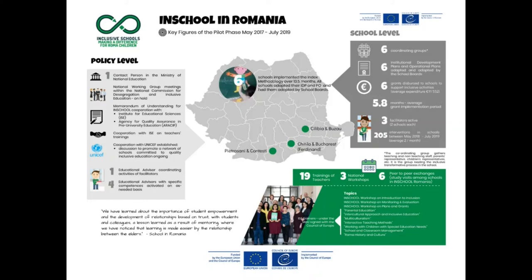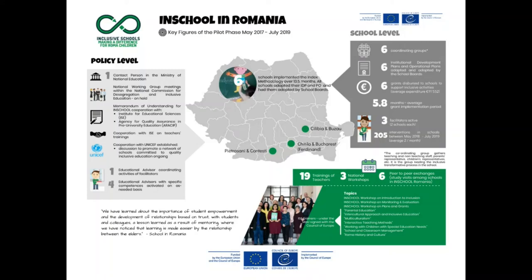As an IN-SCHOOL facilitator in Romania, my intervention involved direct work during the pilot phase with two schools, and later during the second cycle with three schools, plus one new school. My intervention as facilitator focused on acquiring the methodology proposed by the Index for Inclusion, implementing it at the school level, creating coordinating groups, identifying priorities with them, developing grant proposals based on identified needs, and supporting schools to implement the grant activities. Starting from May 2018, I provided regular support — on average two or three visits per month in each school.